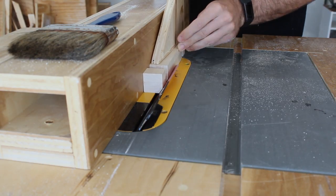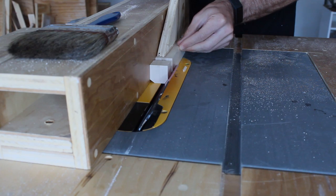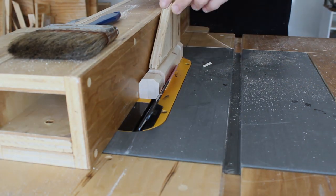I'll angle my table saw blade and cut off all the sharp edges to give this paperweight more of a rounded look.